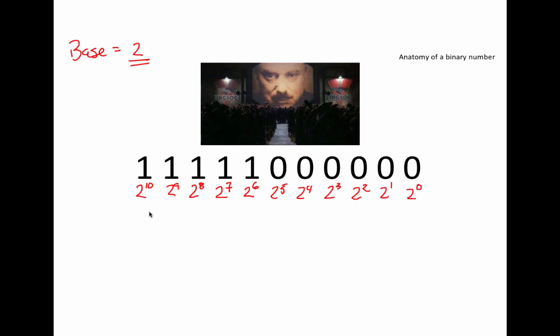It would be helpful to translate these values into something that's a bit more intuitive for us. These would be the units, these would be the 2s. If there was a 1 here, that would mean there would be 2 in the value, which is not the case. These are 4, 8, 16, 32, 64, 128, 256, 512, and 1024.